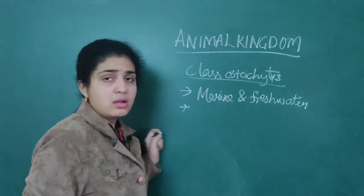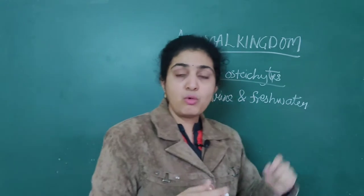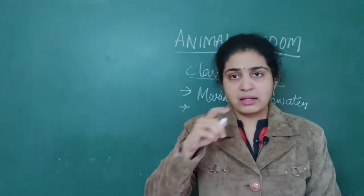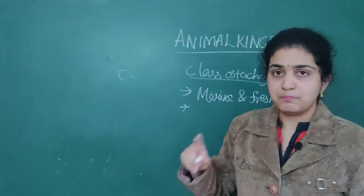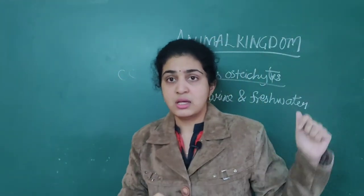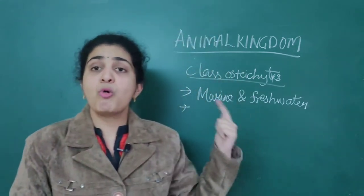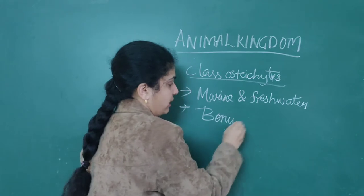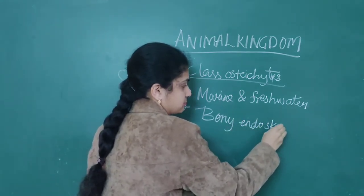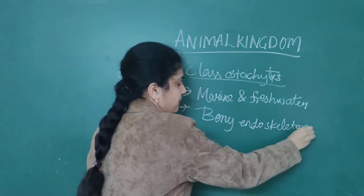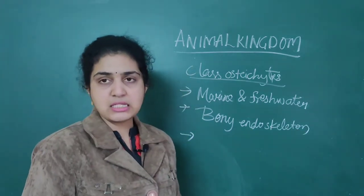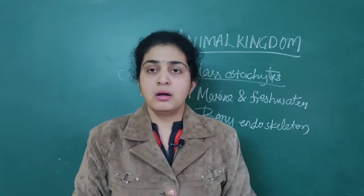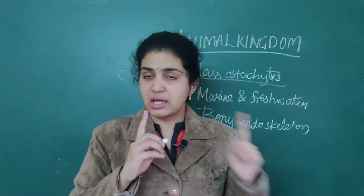Another difference is the skeleton. Chondrichthyes have cartilaginous endoskeleton — remember C and C: Chondrichthyes, cartilaginous. Here, Osteichthyes will have a bony endoskeleton. So bony endoskeleton is present in these organisms.